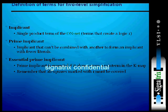For simplification we have something called an implicant. This is a single product term of the onset — terms that create a logic one, that is a logic high. A prime implicant cannot be combined with another one to form an implicant with fewer literals. An implicant might be a minterm or a maxterm, meaning it covers a product of some terms, and a prime implicant is one that reduces the number of literals.